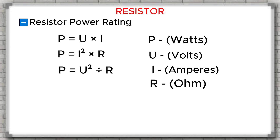We can calculate this power before we put the resistor into the circuit. If we use a resistor with a power rating smaller than the actual power it will consume, the resistor will burn. In practice, we usually choose a resistor with a power rating two times higher than the actual power, to make sure it works safely. Every resistor has a power rating — for example, 0.25 watts, 0.5 watts, 1 watt, 5 watts, and so on. If the actual power is higher than the rated power, the resistor will overheat and burn.